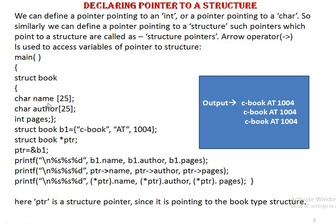Here, one structure 'book' has been created with name, author, and pages. Variable b1 is created with all three values assigned. A pointer variable is then created and initialized with the address of b1, so the pointer points to the starting address of b1. To print values indirectly via the pointer, we use: pointer arrow name, pointer arrow author, pointer arrow pages — or equivalently, (*pointer).name with parentheses, since dot has higher precedence than asterisk.